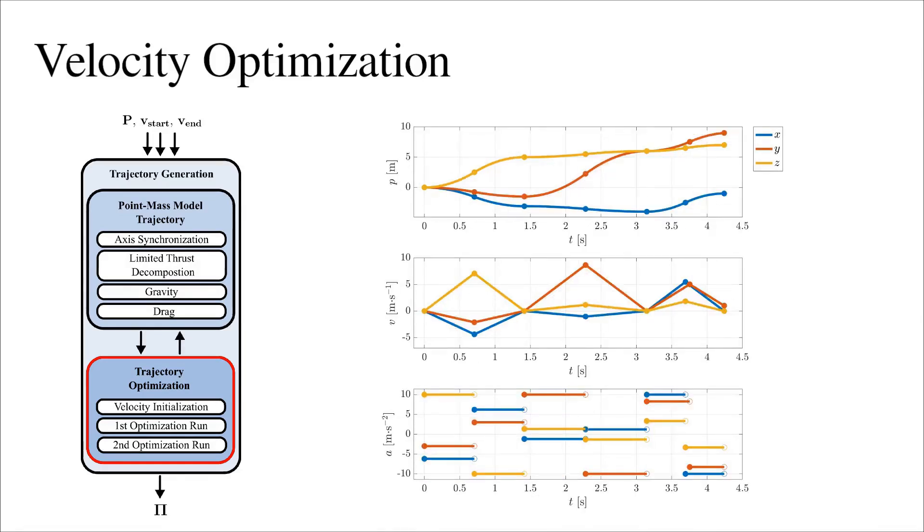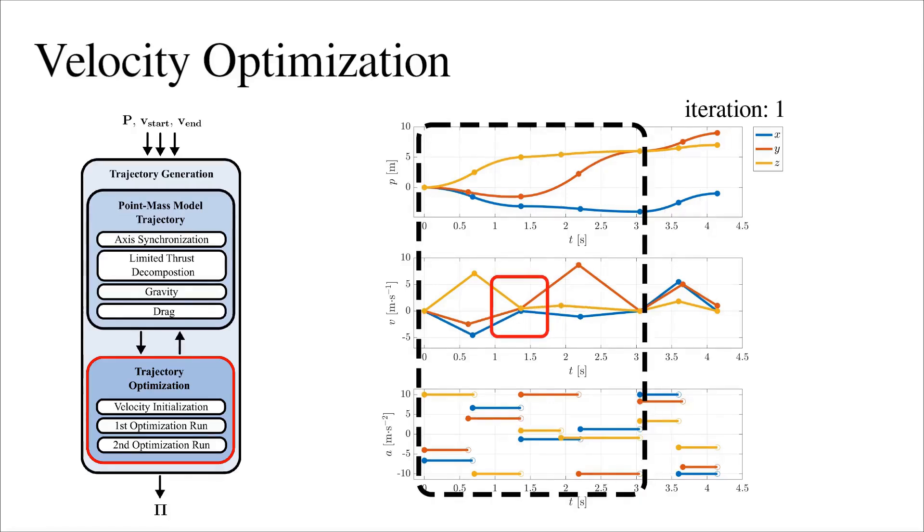For trajectories with two or more via-waypoints, at every iteration, starting from one end of the multi-segment trajectory and going toward the other end, we take two neighboring trajectory segments as marked with the sliding window and apply a velocity update step.